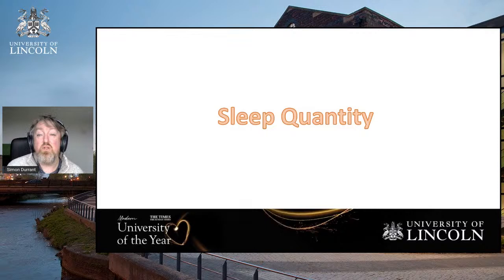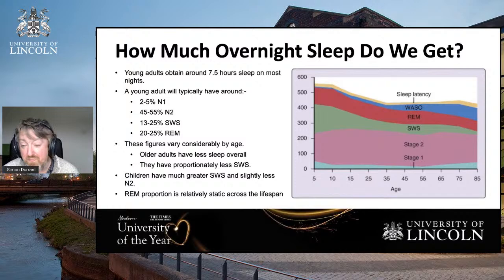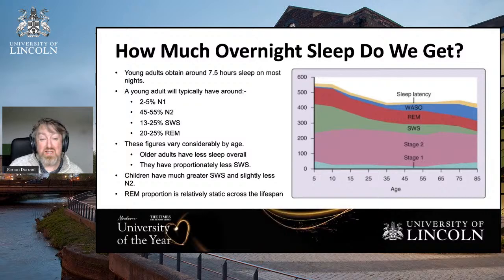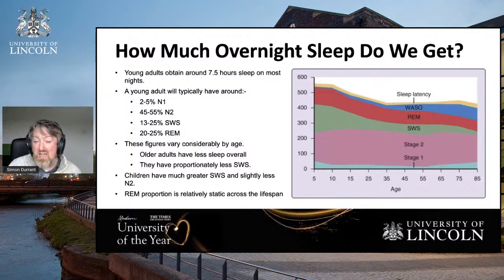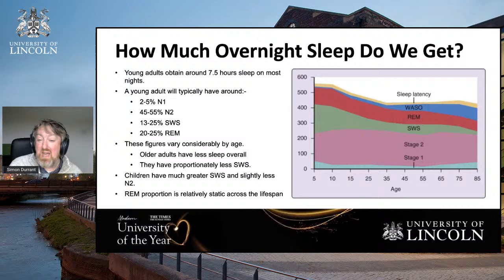So those are the different types of sleep — the three different stages of non-REM sleep and REM sleep, plus of course wakefulness. The next question is: how much sleep do we actually get? This varies as a function of age, so it changes across the lifetime. Young adults tend to get around seven and a half to eight, even nine hours depending on their age. On the y-axis that's in minutes — 600 minutes would be 10 hours, just under 500 would be eight hours. Five to ten year olds are getting around nine and a half hours.